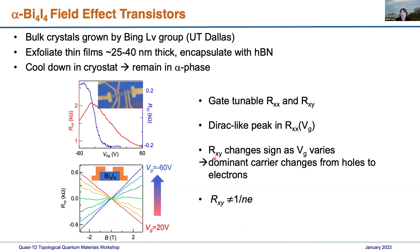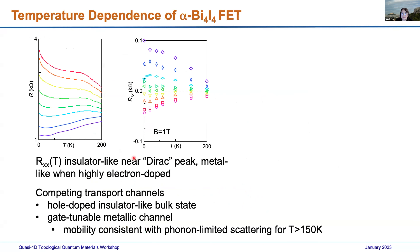The changing sign of the Hall resistance shows that the dominant carrier character changes from holes to electrons. We also note that the Hall resistance is not simply given by the single-carrier model of charge density divided by one. We can estimate the charge density induced by the back gate from capacitance, and it shows it's not simply given by that model alone.